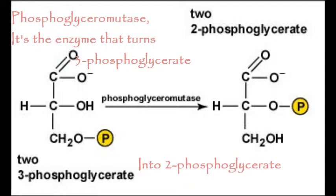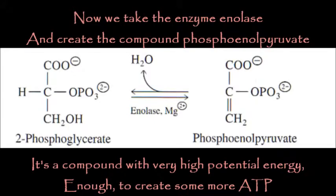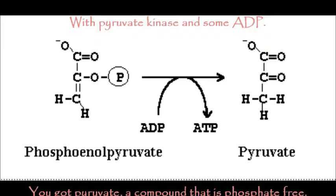Phosphoglycerometase is the enzyme that turns 3-phosphoglycerate into 2-phosphoglycerate. Now we'll take the enzyme enolase and create the common phosphoenolpyruvate — a compound with very high potential energy, enough to create some more ATP. With pyruvate kinase and some ADP, you get pyruvate, a compound that is phosphate-free.